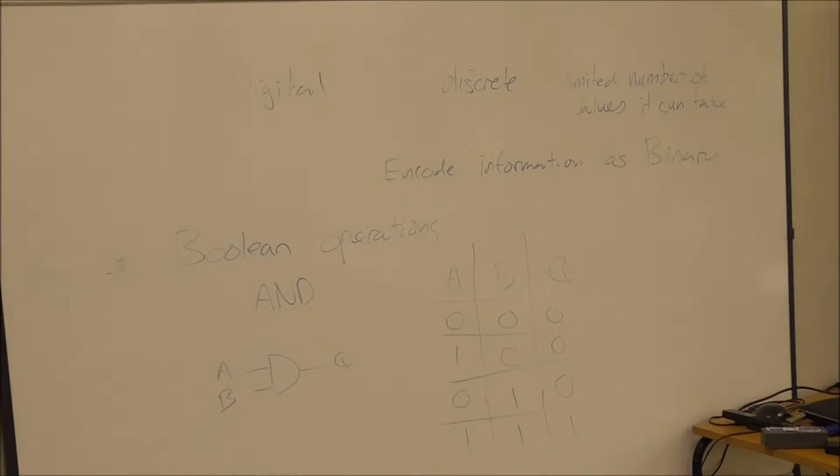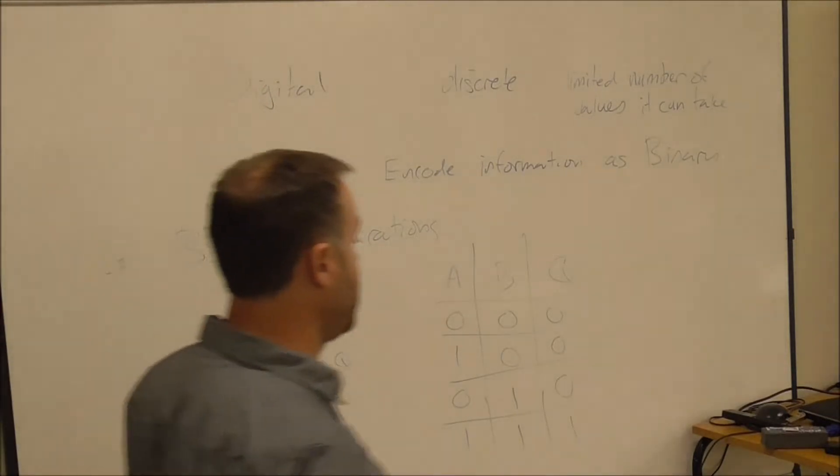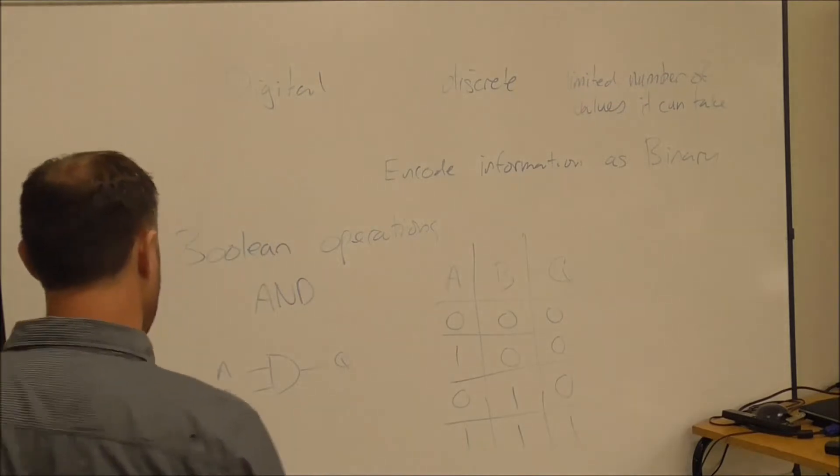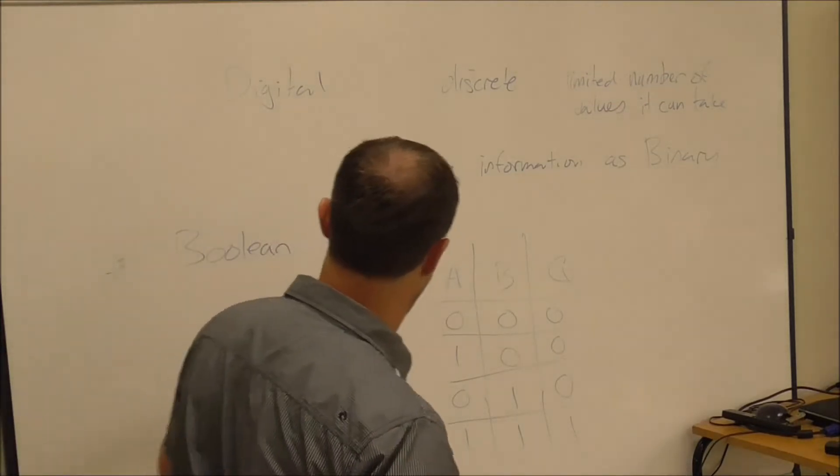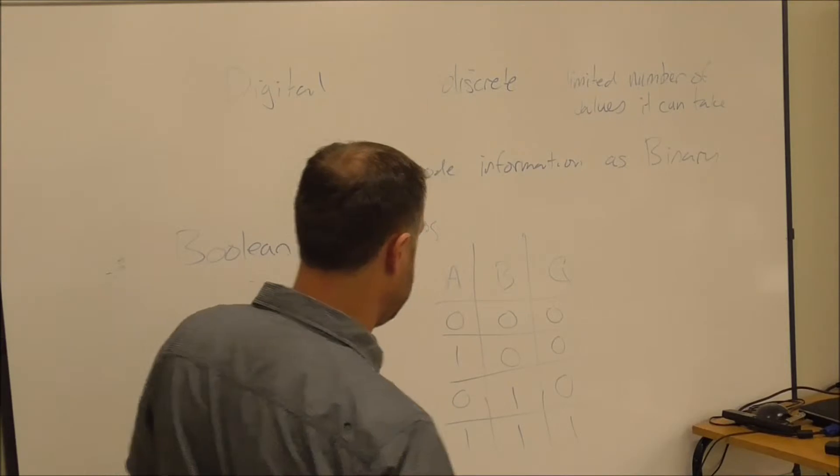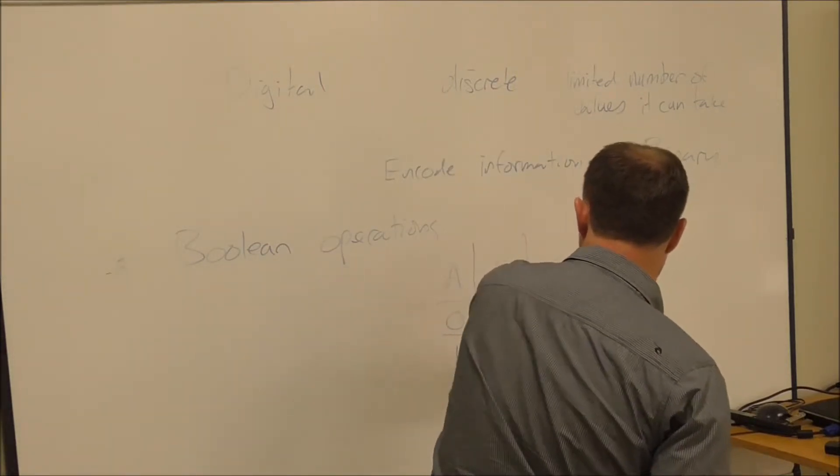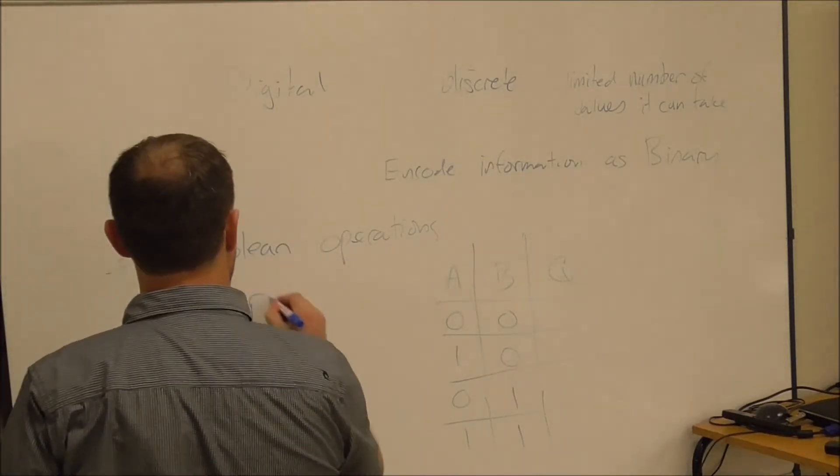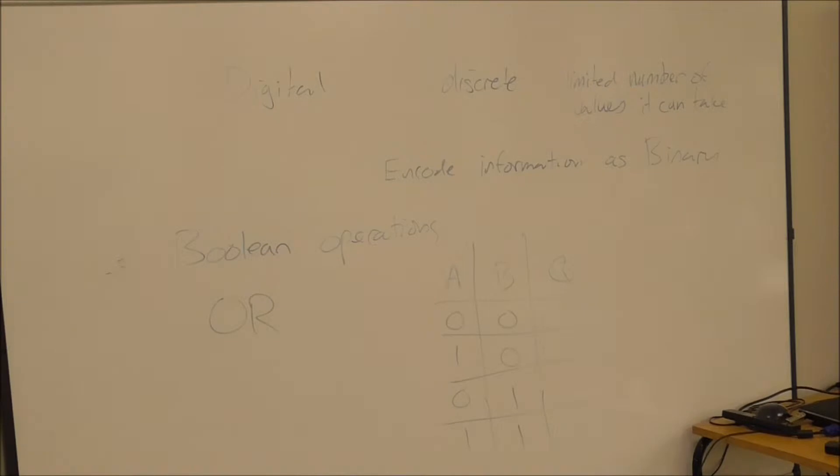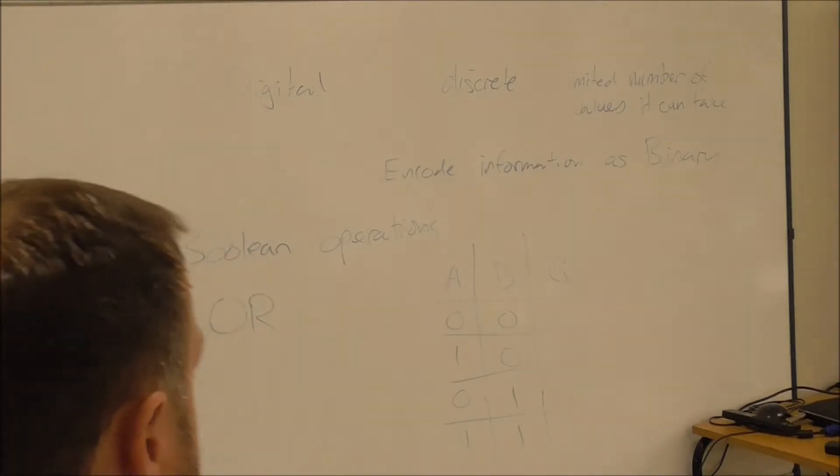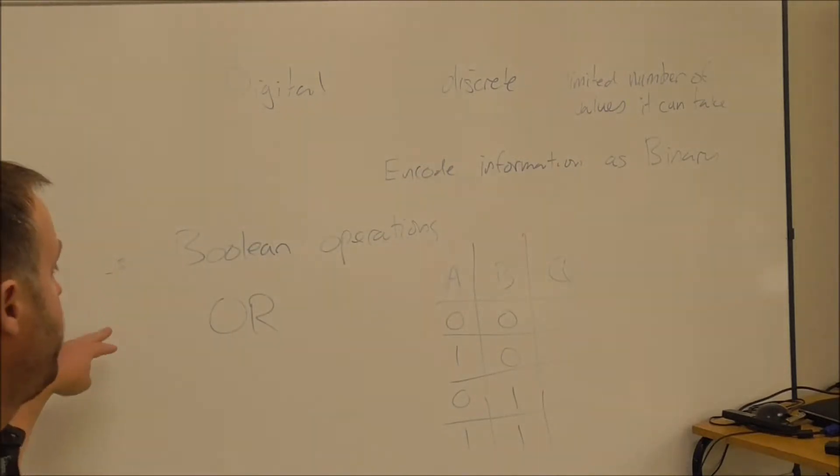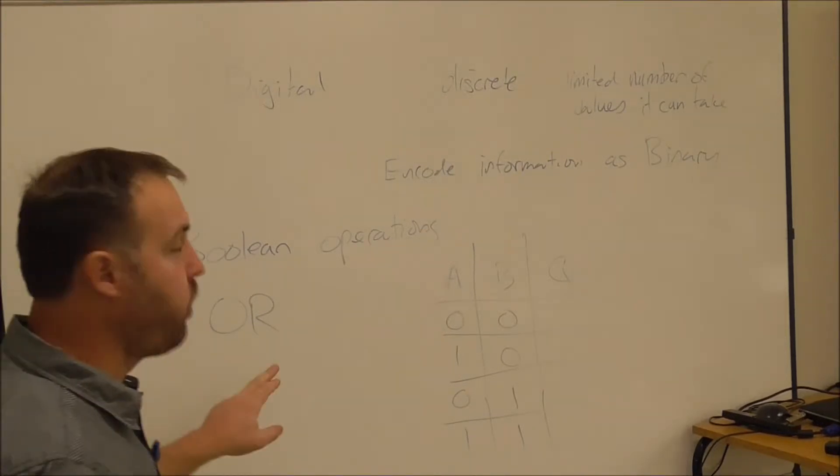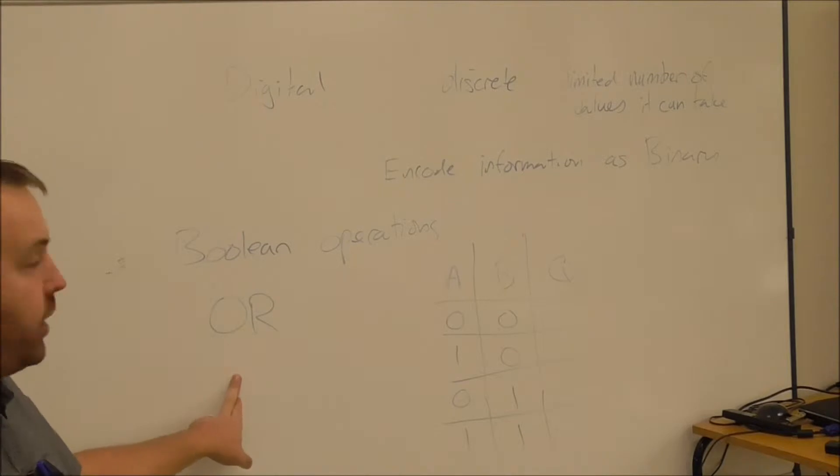Now that's an AND gate. The other type of gate is an OR gate. With the AND gate, it was true when both A and B were true. In this case, it's true when A or B are true, or both of them. If one or the other is true, the output is true.